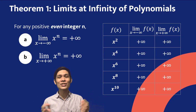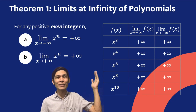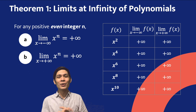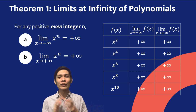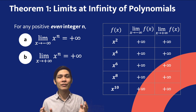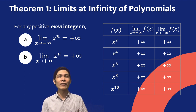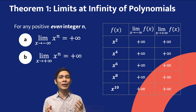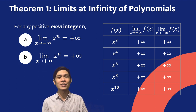Based on the illustrations and the given table, we conclude that for any positive even integer n, the left-hand limit and right-hand limit of x raised to n is positive infinity.